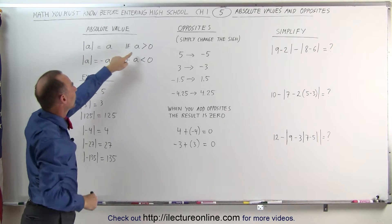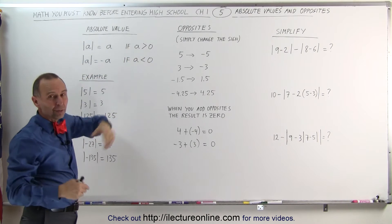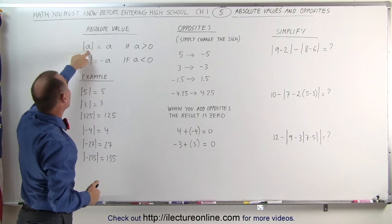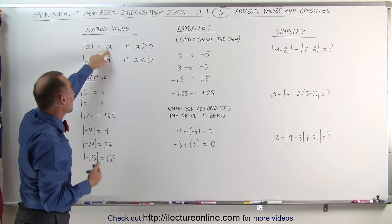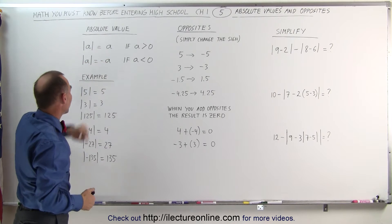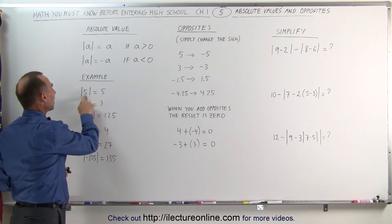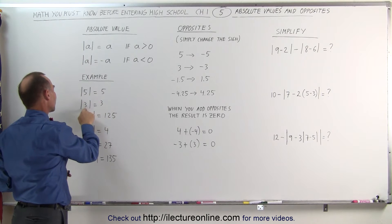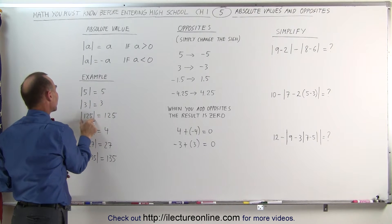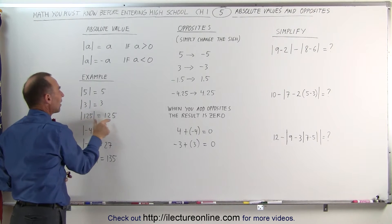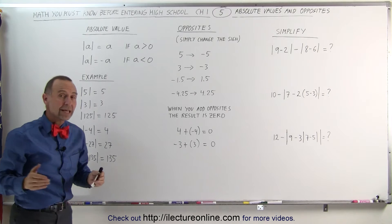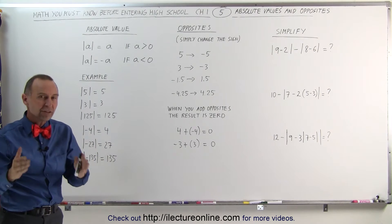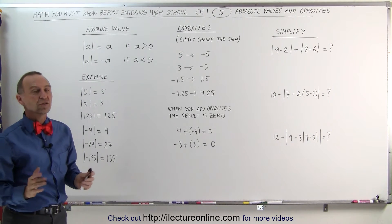If the number is already greater than zero — if it's a positive number — then the absolute value of that number is simply the same number. For example, the absolute value of 5 is 5, the absolute value of 3 is 3, and the absolute value of 125 is 125. So when you take the absolute value of a positive quantity, nothing changes.